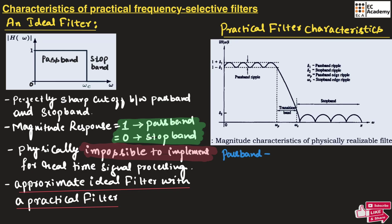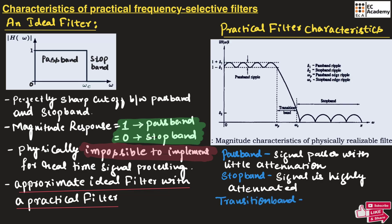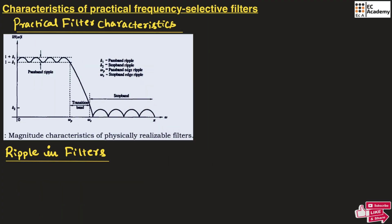Now let us understand the ripples in filters. In the pass band, the response is not perfectly flat but it fluctuates, as you can observe. This fluctuation is called pass band ripple, represented by delta 1. Similarly, in the stop band, the response is not exactly 0 but it may have small oscillations or fluctuations. This fluctuation is called stop band ripple, represented by delta 2.